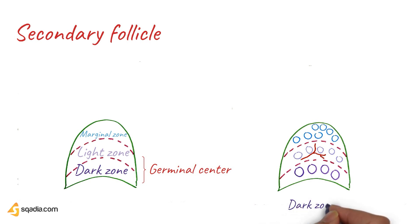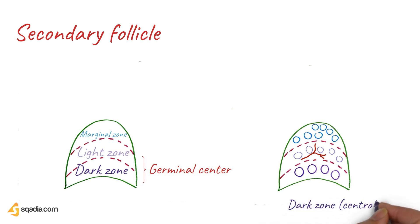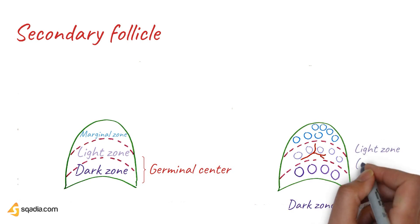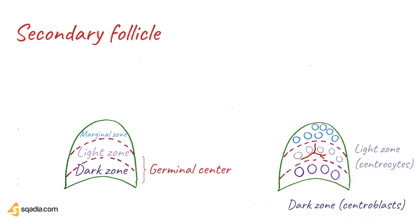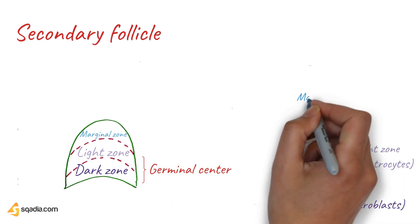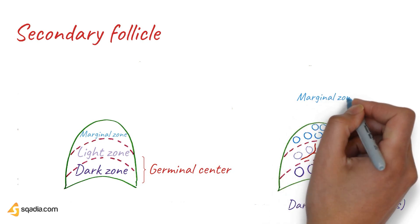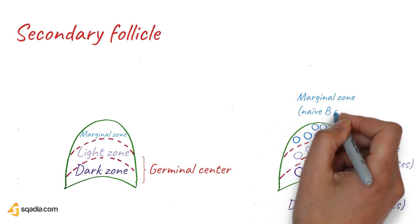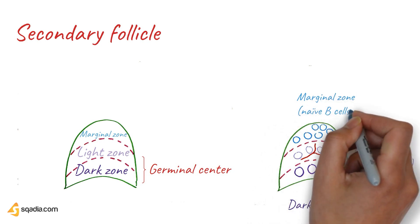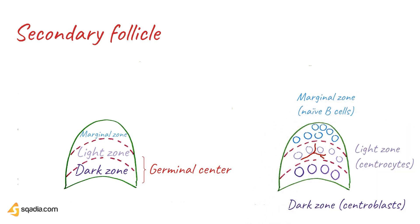The B cells proliferate and hypermutate in the germinal center dark zone as centroblasts. Centroblasts then migrate to the germinal center light zone, differentiating into centrocytes. Naive B cells stay in the periphery of the follicle — the marginal zone.